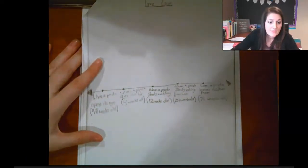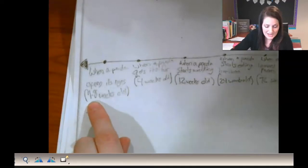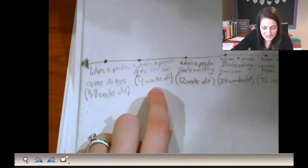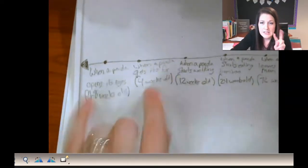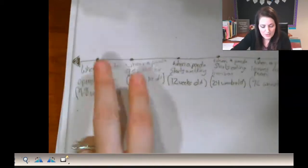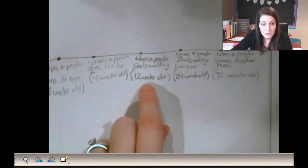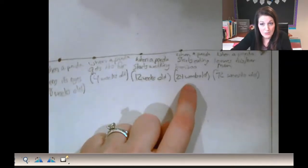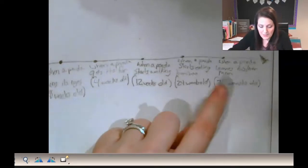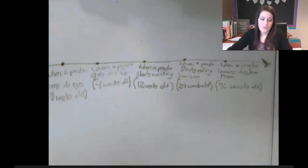The panda timeline shows that a panda opens its eyes at four to eight weeks old, and gets its fur at four weeks old. When a panda starts walking is 12 weeks, when it starts eating bamboo is 24 weeks, and when a panda leaves its mom is 72 weeks old. So it goes in order of when things happened.